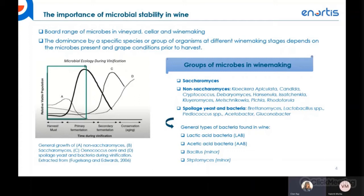General types of spoilage bacteria found in wineries include lactic acid bacteria, acetic acid bacteria, and occasionally Brettanomyces, Bacillus, and Streptomyces. The figure shown represents the general growth cycle of non-Saccharomyces yeasts, Saccharomyces cerevisiae, Oenococcus (the commercial malolactic fermentation bacteria strain), and spoilage yeasts and bacteria during vinification. Both Saccharomyces and non-Saccharomyces yeasts demonstrate peak viable population during early fermentation stages, while spoilage populations tend to accumulate at mid-stage of malolactic fermentation and continue through aging.